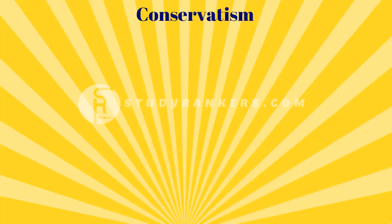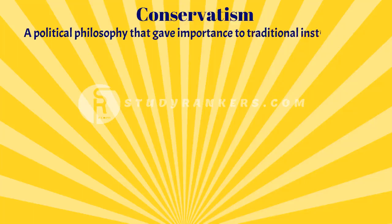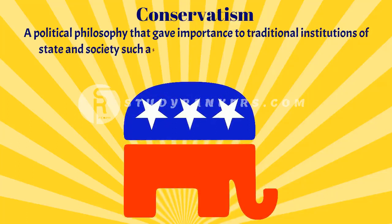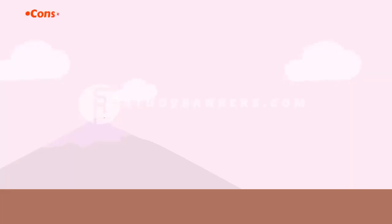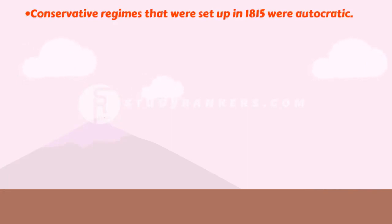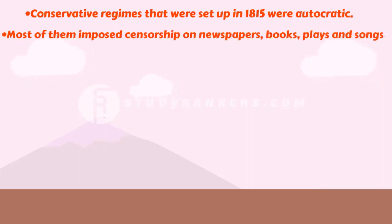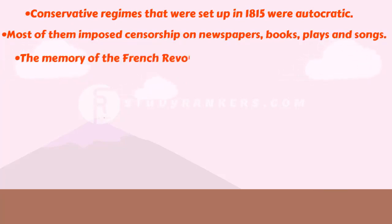After the defeat of Napoleon in 1815, European governments were driven by a spirit of conservatism. Conservatism is a political philosophy that gave importance to traditional institutions of state and society, such as monarchy, the church, social hierarchies, property, and the family. Conservative regimes set up in 1815 were autocratic and did not tolerate criticism. Most of them imposed censorship on newspapers, books, plays, and songs which reflected ideas of liberty and freedom. However, the memory of the French Revolution continued to inspire liberals.